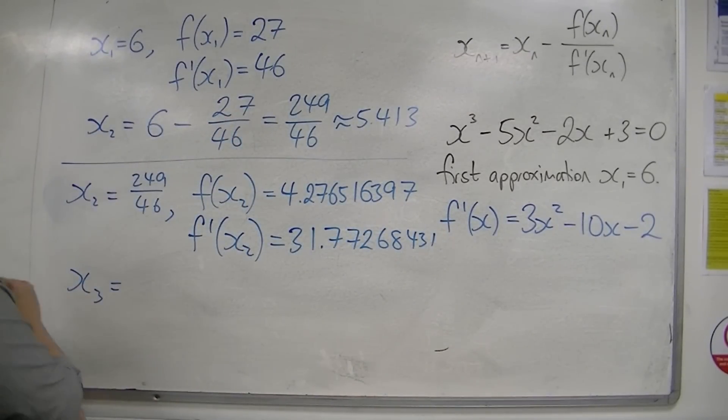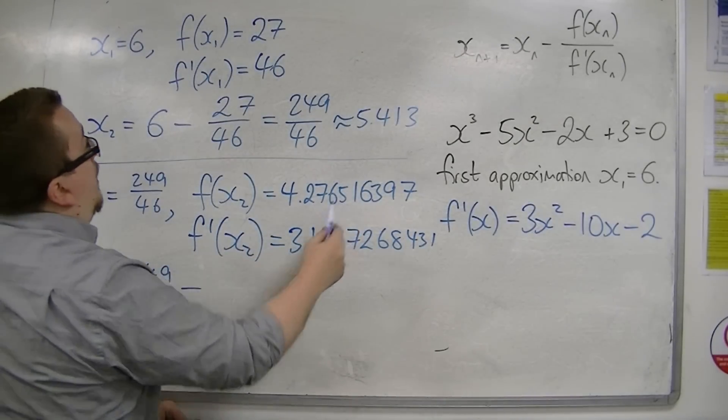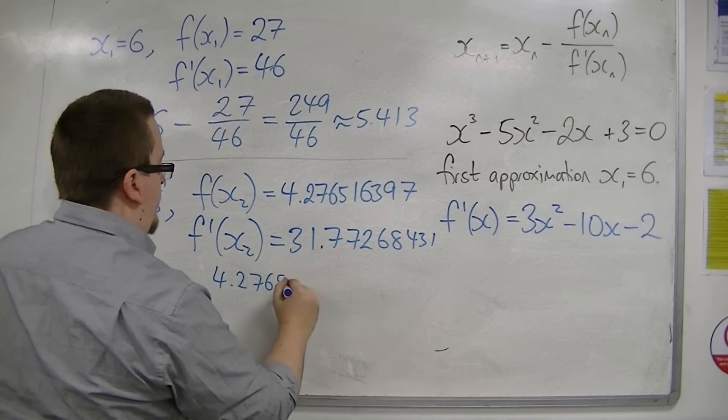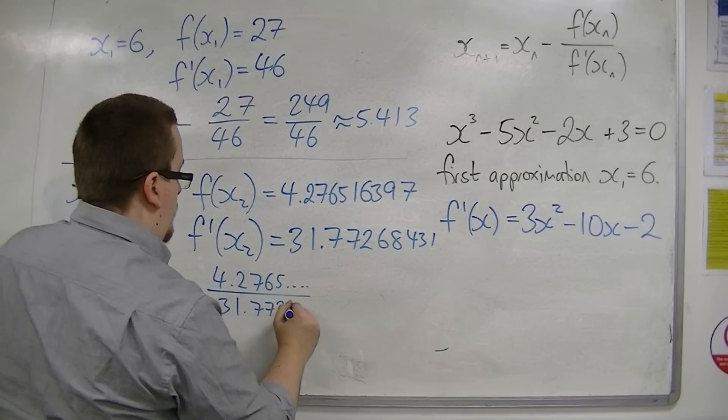So x3 is equal to 249 over 46, take away f of x over f prime. So 4.2765 dot dot dot over 31.772 dot dot dot.